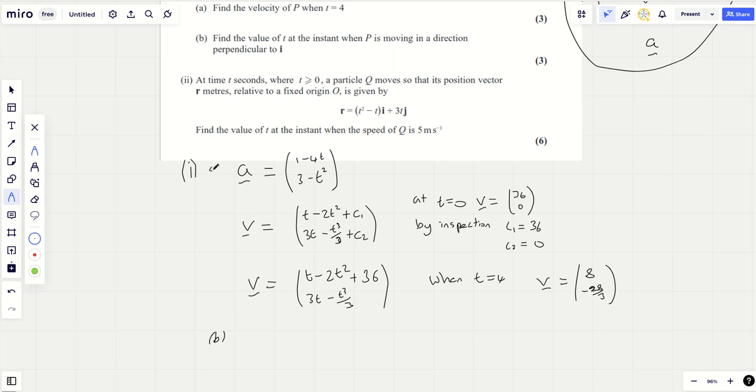Part B: find the value of T at the instant when P is moving in a direction perpendicular to I. Now it's velocity which tells you direction of motion. Velocity always tells you direction of motion. And we want it to be perpendicular to I. So the velocity vector, which is T minus 2T squared plus 36. Well, this vector is going straight up. It will be going straight up when the J component is zero.